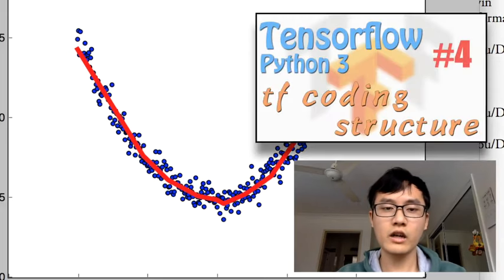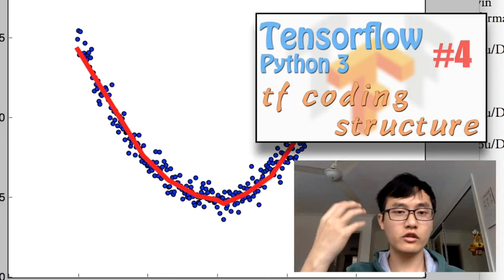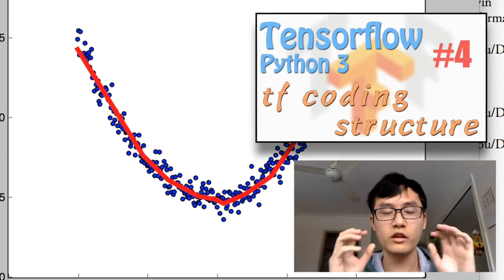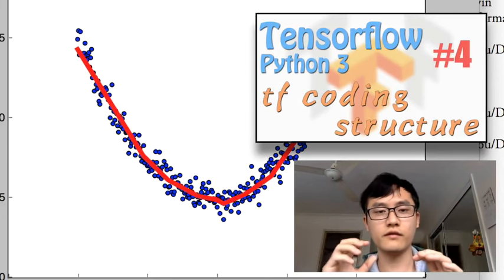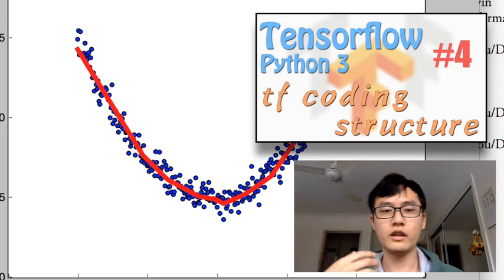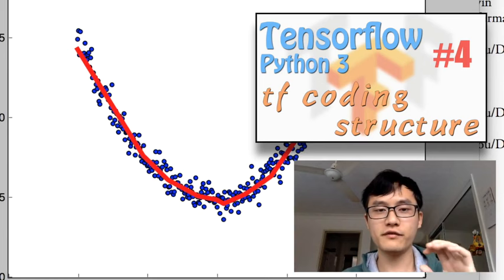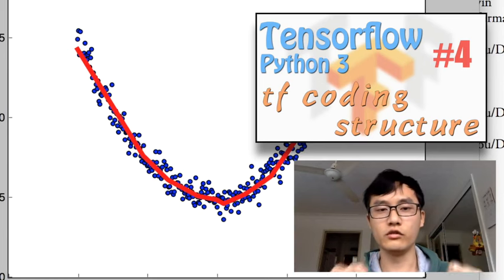So this is all for today. Next time I will show you the whole structure that you must build in your TensorFlow code. What is the coding structure or what is the coding format for building your TensorFlow neural network?